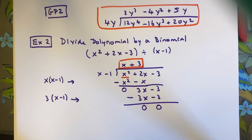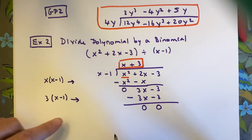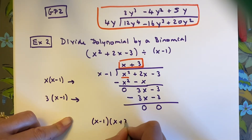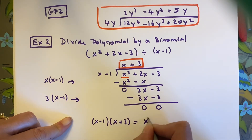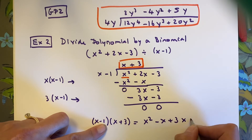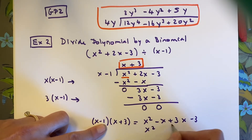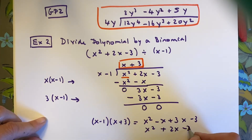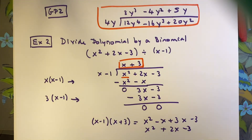It's easy to verify: what is x minus 1 times x plus 3? That gives x squared minus x plus 3x minus 3, which simplifies to x squared plus 2x minus 3 — exactly our original polynomial. That's how you can catch your mistakes.